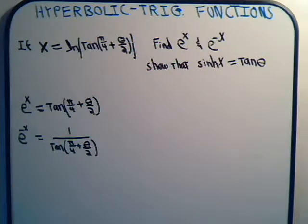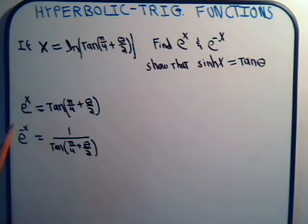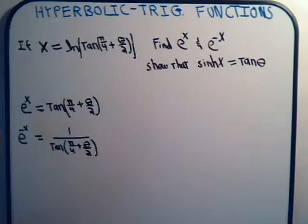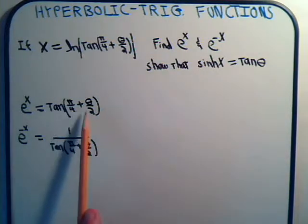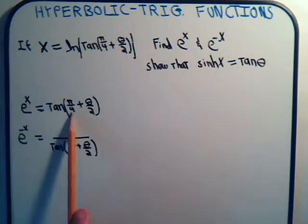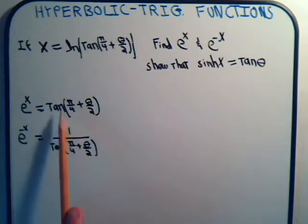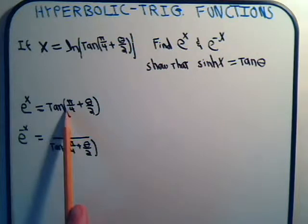Now we're supposed to determine the hyperbolic tangent of x — that would be e to the x minus e to the minus x divided by 2. But first, notice we're adding angles together here, and not just any angle: we've got the tangent of pi over 4.